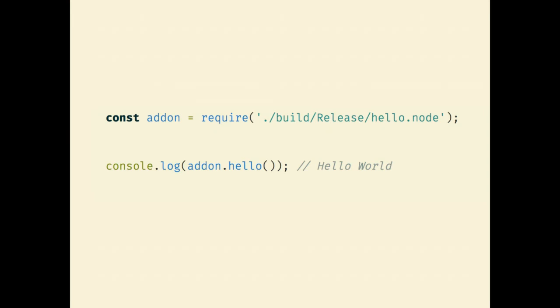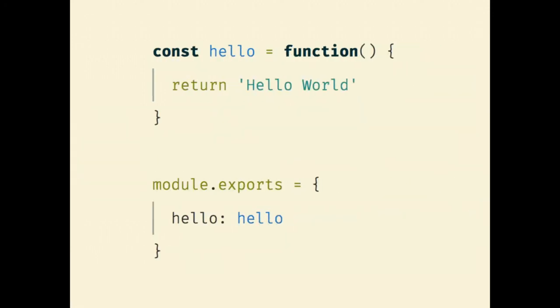I'm going to show you some of the code and how you can actually build some of these add-ons yourself, starting with a quick hello world example. If you haven't dug too deep into Node.js, what we're doing is requiring this add-on module and then calling the hello method on it and printing out the result — all this does is spit out the string 'hello world'. To look at the JavaScript implementation of this module, all we do is define a function called hello that returns the string 'hello world', and then assign that to the hello property of module.exports — essentially setting up what gets returned when you require this module.